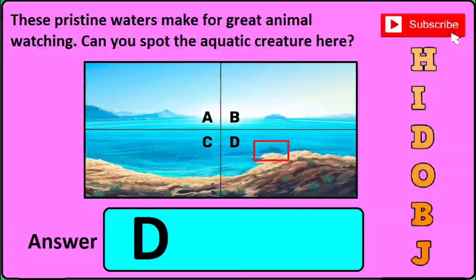Now in version two of this same question, you can see that a dolphin is in D, so just click D in the answer box if you find this sort of image in question number one.